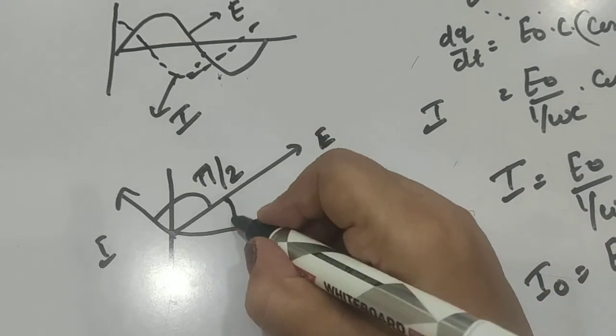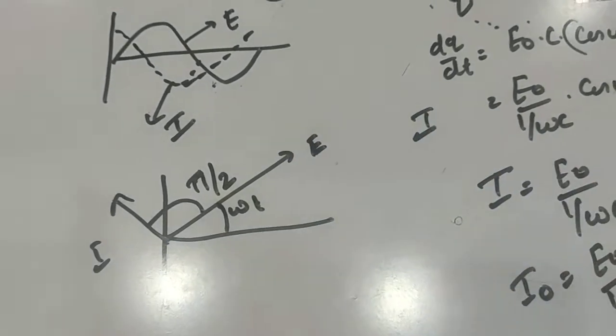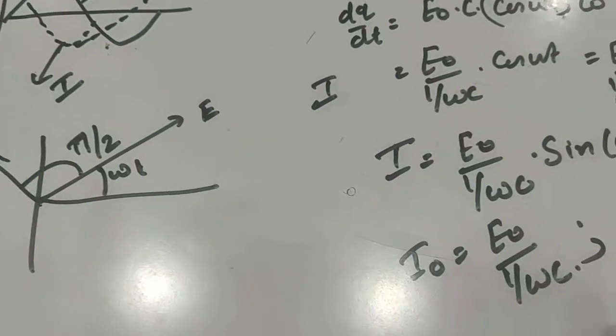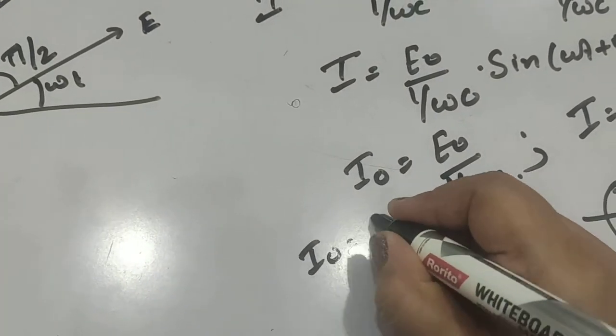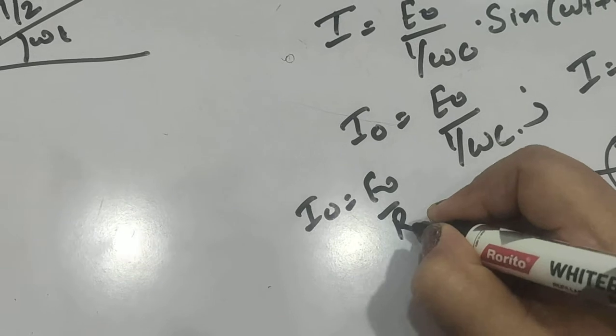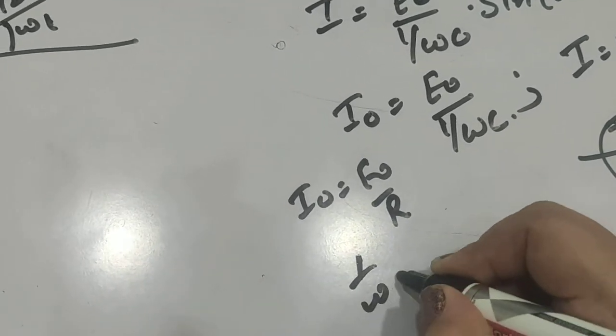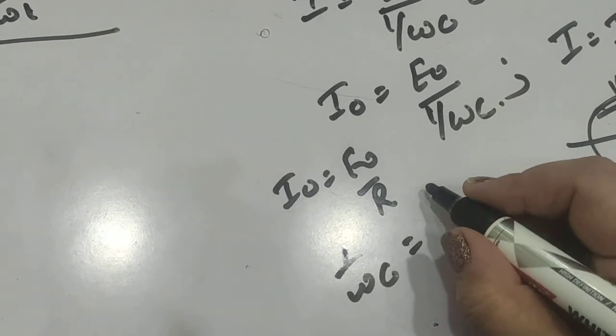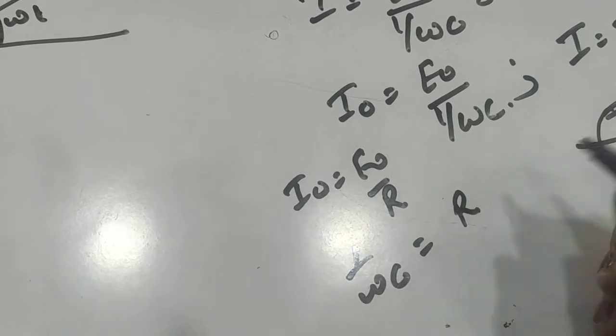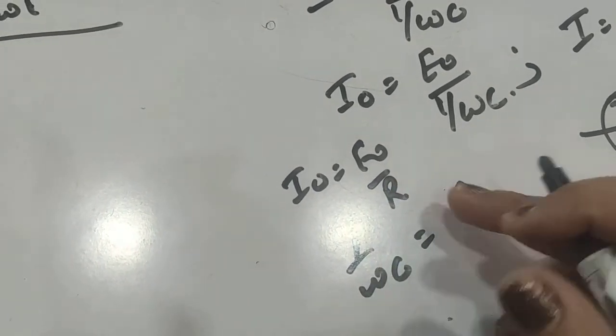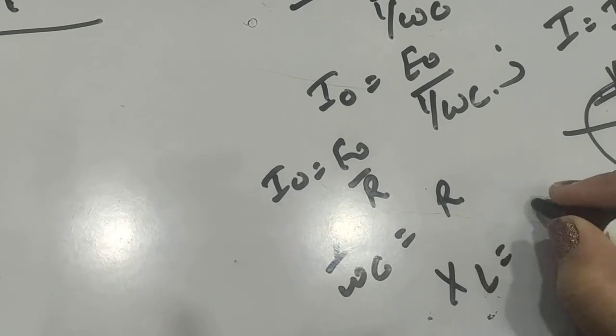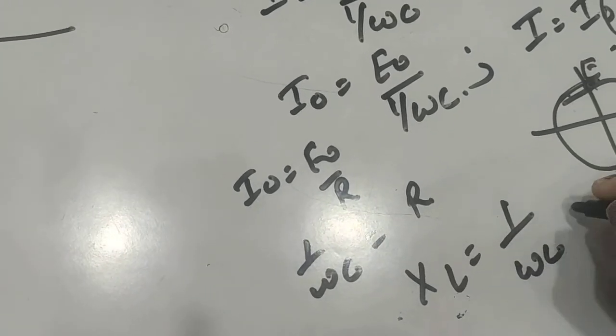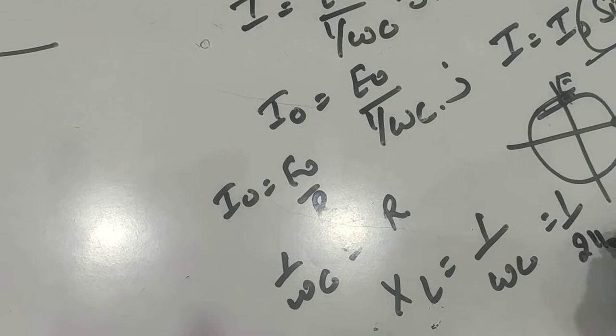So now if we compare this with Ohm's law, I₀ = E₀/R, so 1/(ωC) = R, and this is known as capacitive reactance. So Xc = 1/(ωC) = 1/(2πνC).